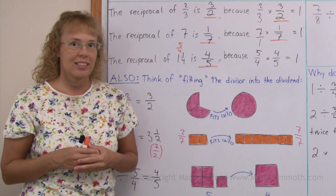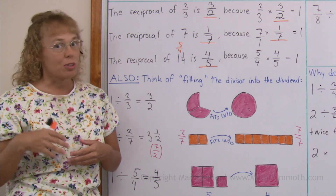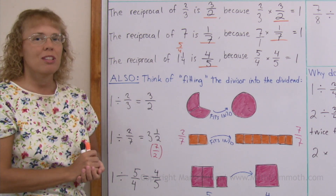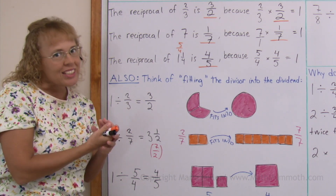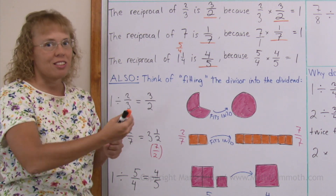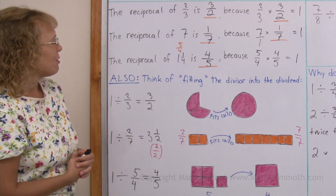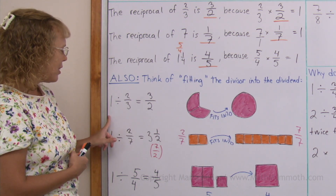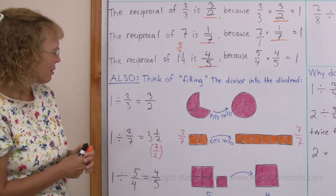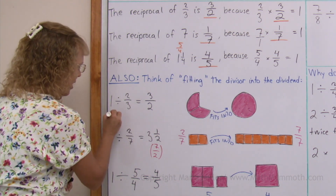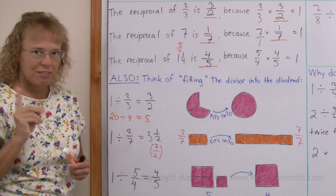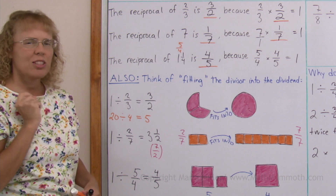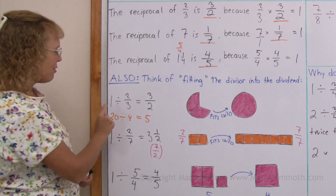Now I want to tie this with a certain meaning for division. In any division problem with whole numbers, you can think of the division problem as fitting the divisor into the dividend. For example, 20 divided by 4 equals 5 — you can think: 4 fits into 20 five times. Let's apply that idea now to these fraction divisions.